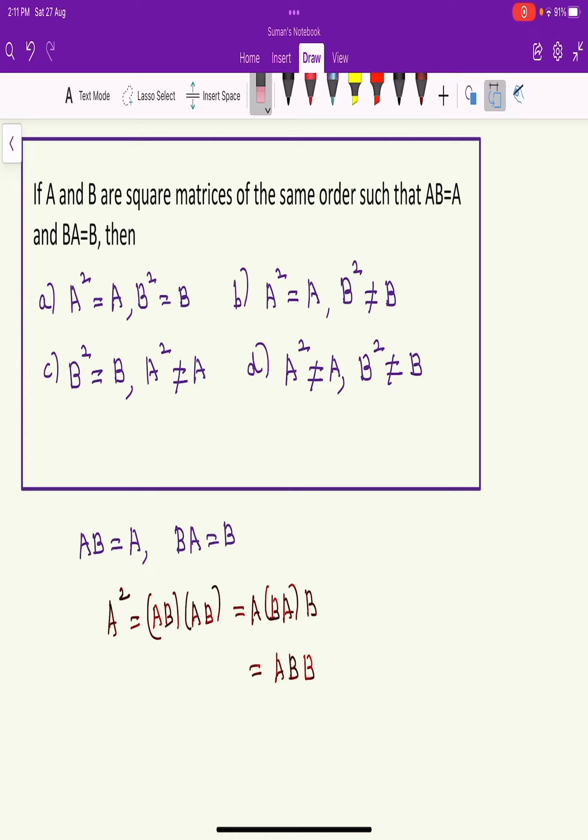But BA equals B, so this is AB into B. Again, AB equals A, so this is equal to A into B, and A into B equals A. So we have A squared equal to A.